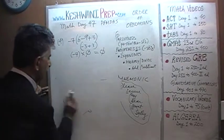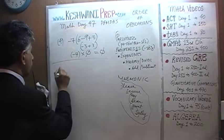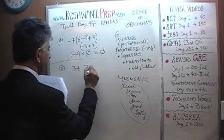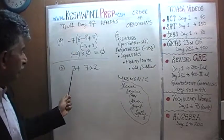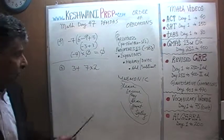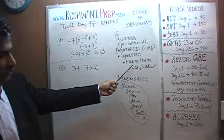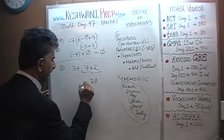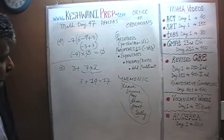Number 5: We have 3 plus 7 times 2. Do we go left to right and do 3 plus 7 first, then multiply by 2? No — order of operations tells us we must do multiplication first before addition. So we take care of 7 times 2 first: that's 14, plus 3. The correct answer is 17, not 20.